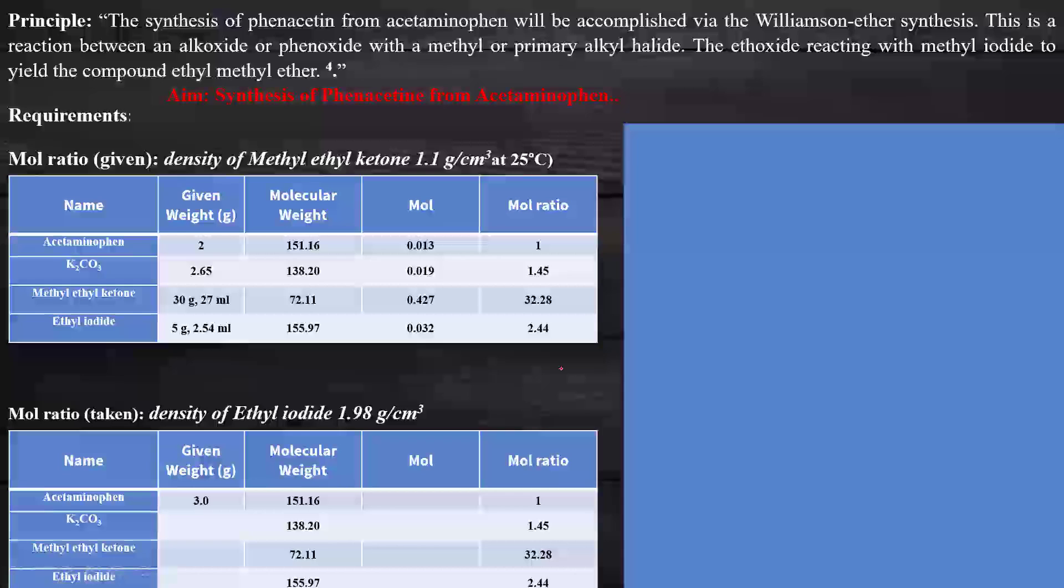Now we are going to discuss the principle of phenacetin synthesis. The principle deals with acetaminophen being accomplished via Williamson ether synthesis. This is a reaction between an alkoxide or phenoxide with a methyl or primary alkyl halide. The ethoxide reacting with methyl iodide yields ethyl methyl ether. Like this: ethoxide with methyl iodide in the presence of solvent yields methyl ethyl ether.